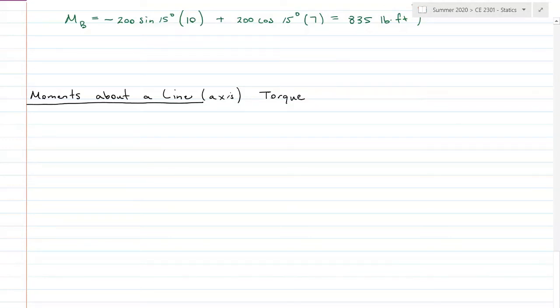And then moment about a point is going to be more like our wrench where we're rotating that screw or bolt into place. So if we have moments about a line, the equation for this is the unit vector of that line, dot product, the position vector connecting the force to the line, cross product, the force itself.